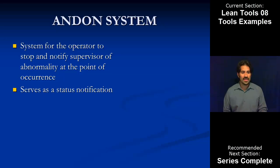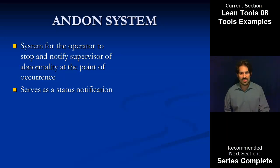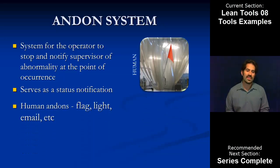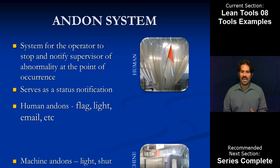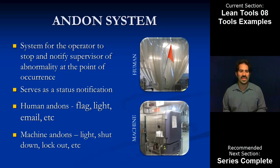Moving on to the Andon system: at its core, the Andon system is a way for the operator to stop and notify a supervisor when there's an abnormality at that point of occurrence. It's also a status notification — is the process running? Is there an abnormality? There are two kinds of Andons: human Andons — flag, light, email, text message — and machine Andons — a light, the machine shuts down or locks out. That's how these Andons get put into place: some form of simple notification.